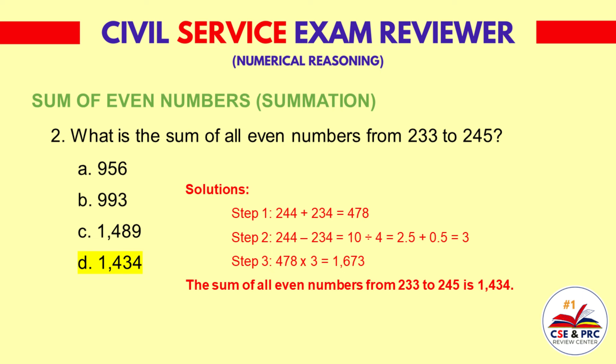Step 3: 478 times 3 is equal to 1,673. The sum of all even numbers from 233 to 245 is 1,434.